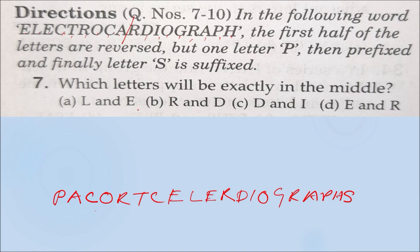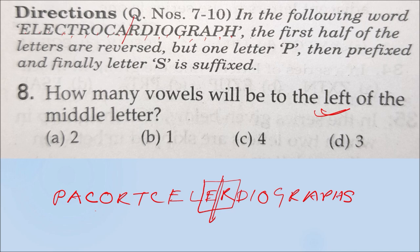Question number seven asks which letters will be exactly in the middle. Since there are an even number of letters after the transformation, two letters fall in the middle — E and R. You have to consider both. So option D, E and R, is the correct answer. Question eight asks how many vowels are to the left of the middle letter. The vowels to the left are E, O, and A — three vowels — so option D is correct.